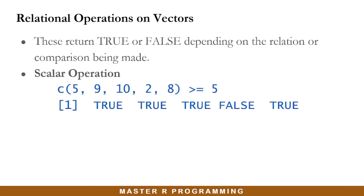In a scalar relational operation, every element in the vector is compared to the scalar. In this example, the vector is being compared to the scalar 5 using the greater than or equal to relational operator. The first element 5 is indeed equal to 5, so R returns true for that comparison. R returns true if the condition is satisfied, or false if otherwise.